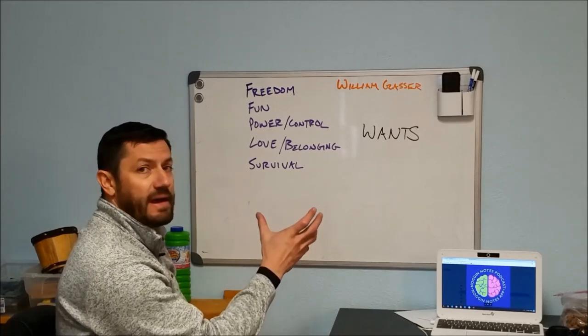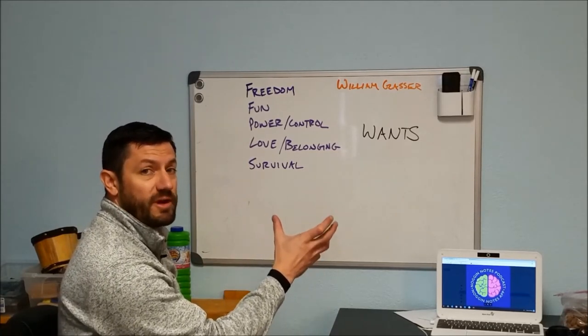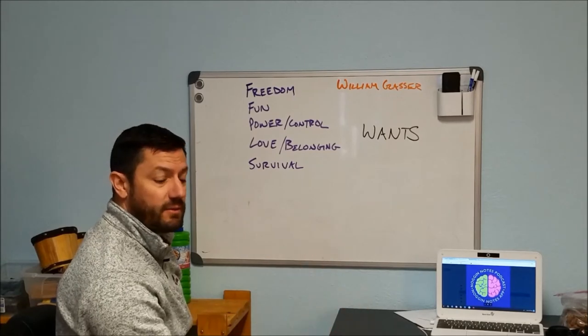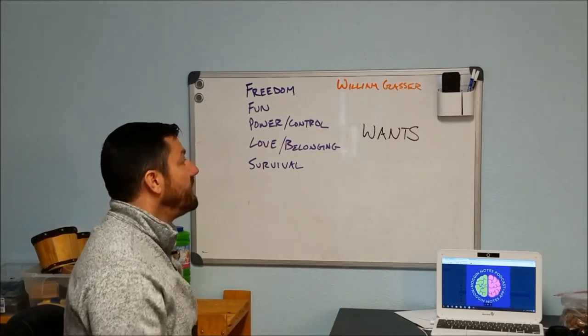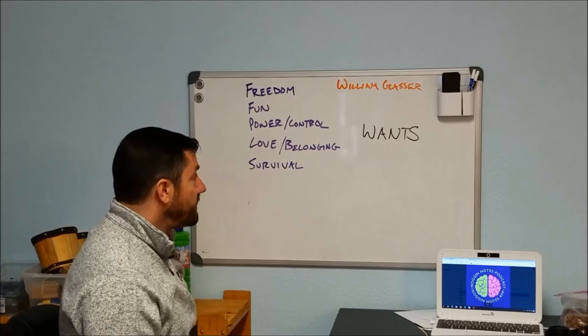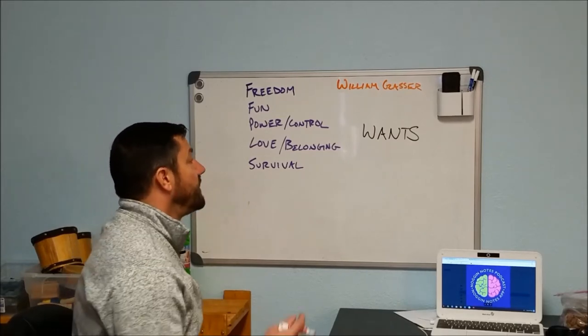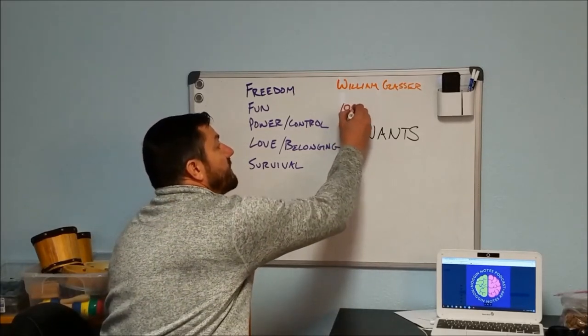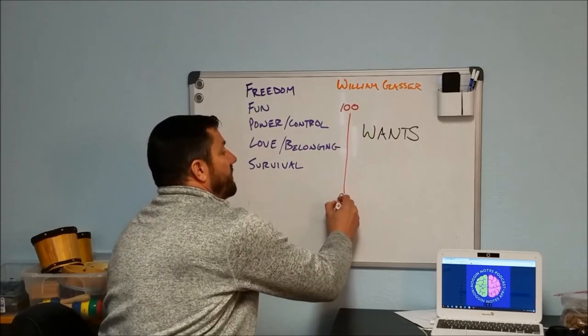What Glasser says is that these can all be described in a graphic form by a car, an overview of a total behavior car that can explain why we do what we do. I'll get into that in a minute, but what I wanted to explore with you first is the idea that these can all be met on a scale of healthy.